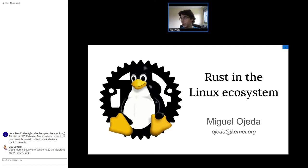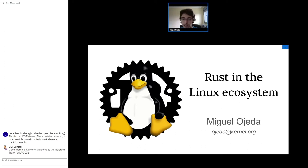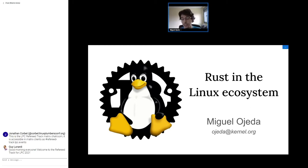The kernel summit talk is more or less a follow-up of this one. Here I will introduce what is Rust and why we would like to have Rust in different projects, and then the kernel summit one will be more focused on the current use case of the kernel. As you may know, Rust for Linux is a project that tries to answer the question of whether we want Rust in the kernel, whether it's a good idea, what are the challenges, etc. I'm leading that effort along with Alex and Wesson and a lot of other people.